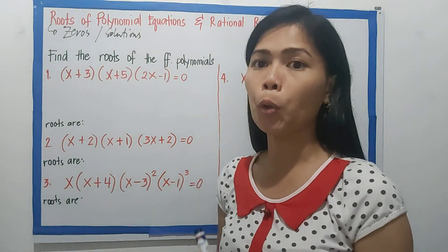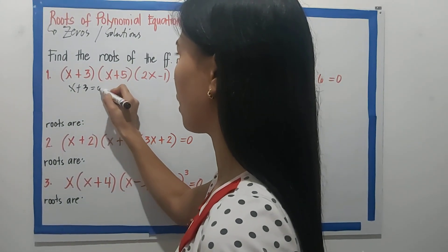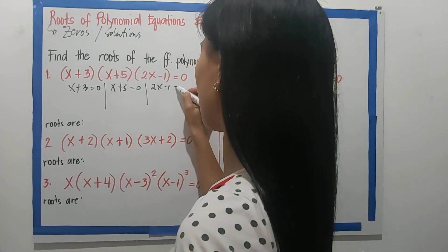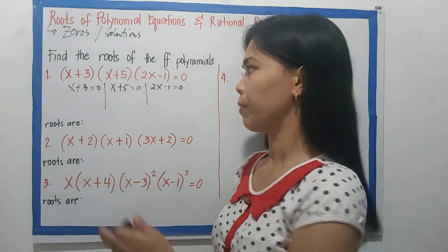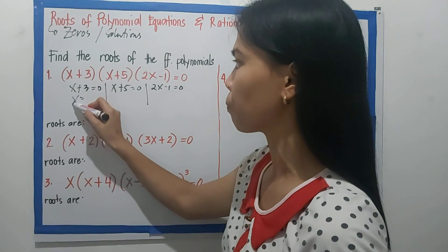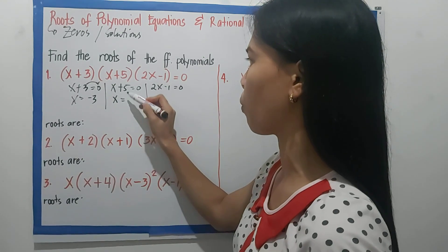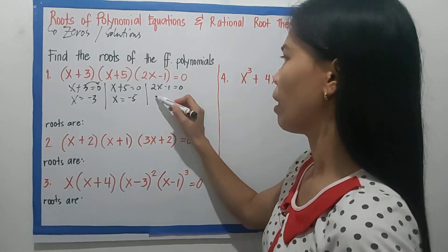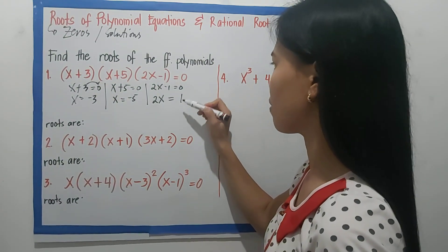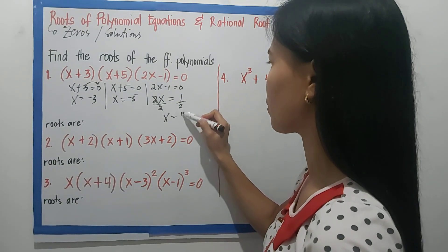We apply zero product property here. We can separate each factor and equate each one to 0. And of course, let us solve for x. Just like this. So x+3=0, so x=-3. On the other one, transpose 5, that would be -5. And on this one, we have 2x-1. 2x=1. We divide both sides by 2. Therefore, x=1/2.